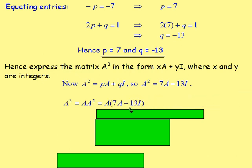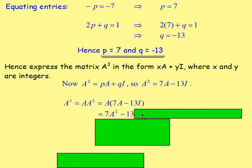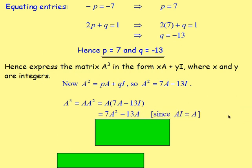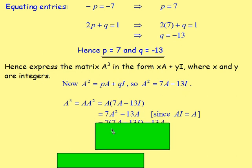Well, A³ is A² times A, or A times A². So we would have matrix A multiplied by A², and remember A² is 7A - 13I. So we can set that up. Multiplying out the brackets, we'd have A times 7A, which gives us 7A², and then 13I times A — remembering that AI equals A — so that would be 13A.